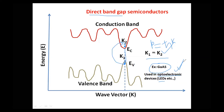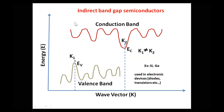Now let us discuss indirect bandgap semiconductors. In an indirect bandgap semiconductor, the bottom of the conduction band and the top of the valence band are not at the same K point. That means K1 is not equal to K2. This is the first key observation on the E-K diagram.